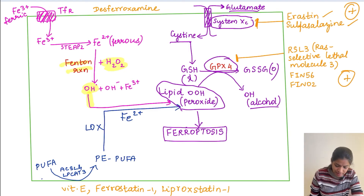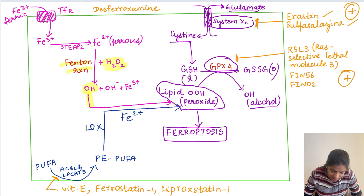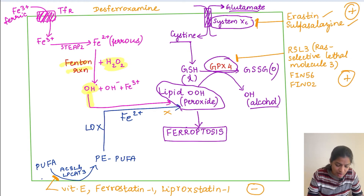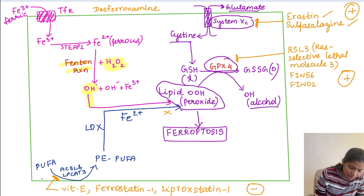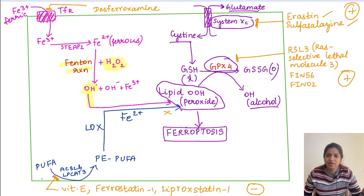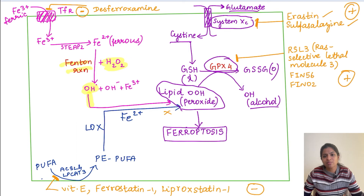To decrease ferroptosis, we can block the enzymes ACSL4 and LPCAT3 — which catalyze lipid peroxide formation — using drugs like vitamin E, ferrostatin-1, or liproxstatin-1. When these enzymes are inhibited, PUFA is not converted to lipid peroxides, so ferroptosis decreases. Additionally, blocking the transferrin receptor by chelating iron with agents like deferoxamine prevents iron uptake, stops the Fenton reaction, and thus decreases ferroptosis.